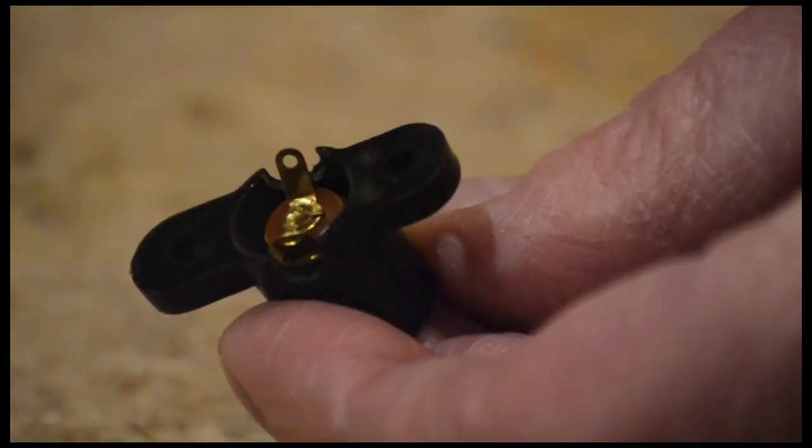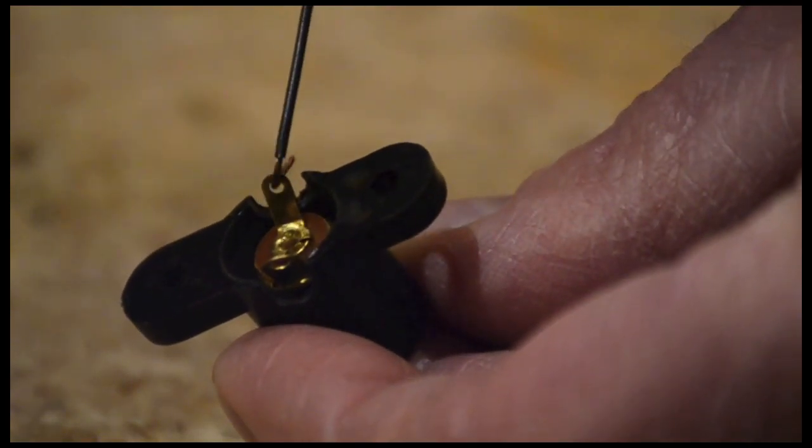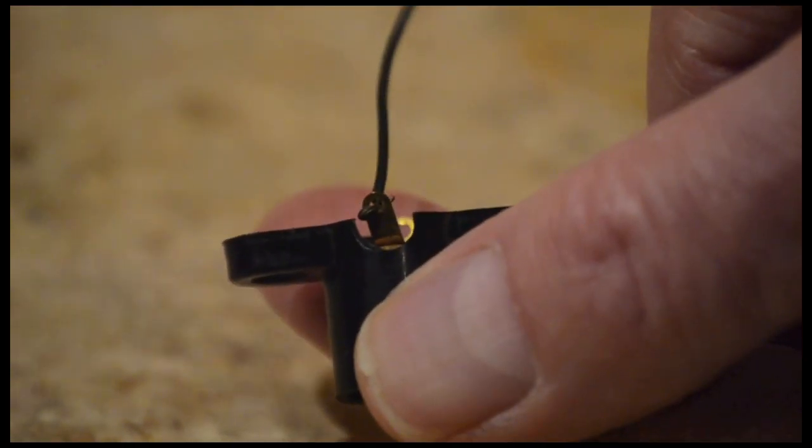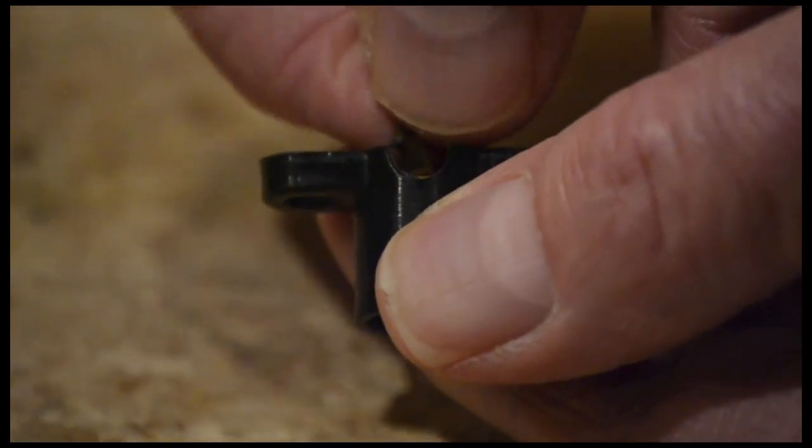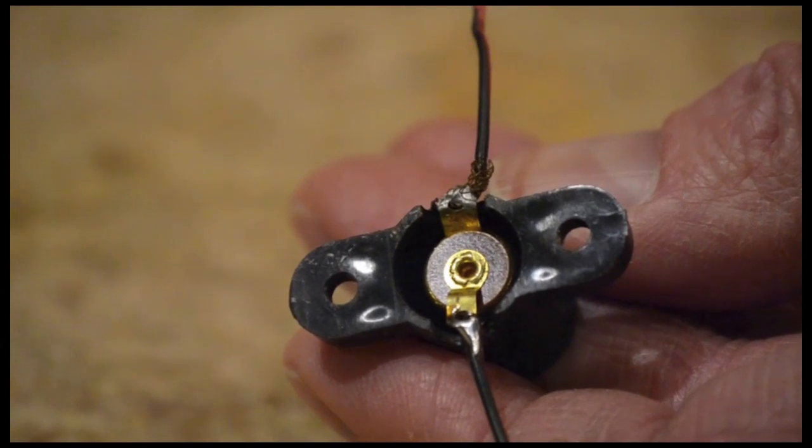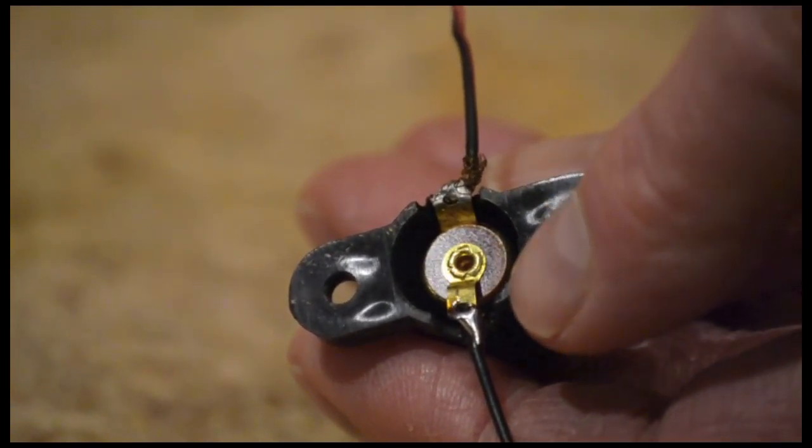If you have soldering terminals, loop the ends of each wire, then slip them through the holes. Twist the wires so they will stay securely in place. Soldering the wires to the terminals will make the connection stronger, but soldering is optional.